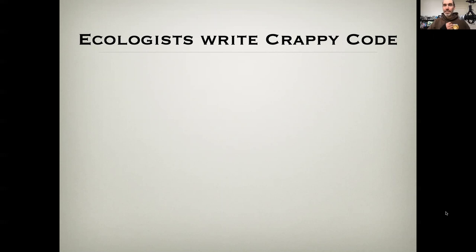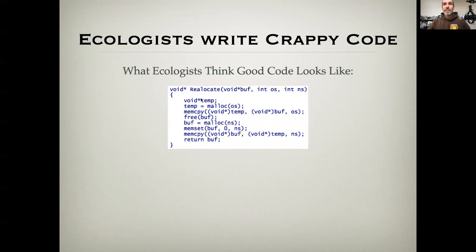Furthermore, I find that one of the challenges that ecologists have is that they actually may not fully understand what good code looks like. I've met folks who think this is what good code looks like because they assume that good code means demonstrating a very deep understanding of subtle nuances and very elegant, clever things.